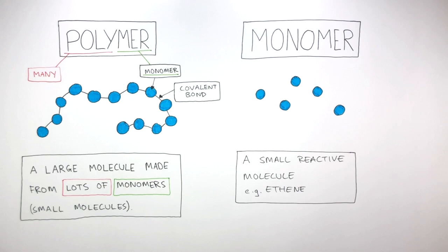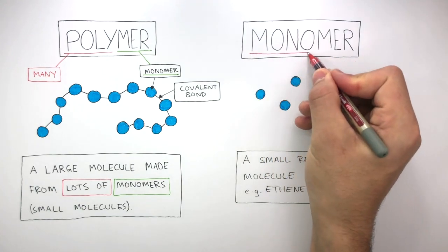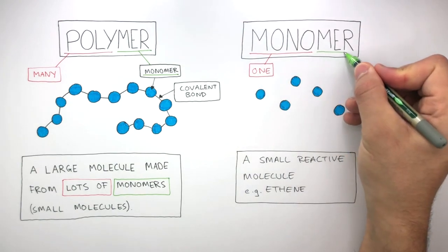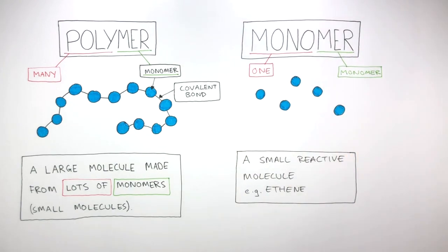When we look at the word monomer, we can see the prefix mono just means one. And we already know the suffix mer means monomer or molecule. So a monomer is one molecule, a small reactive molecule.